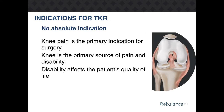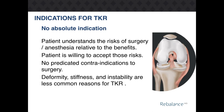While there is no absolute indication on whether surgical treatment is required, knee pain is the primary indicator. Another strong indicator is whether knee disability affects the patient's quality of life. In order to be indicated for knee replacement surgery, the patient must understand the risks of surgery and anesthesia relative to their benefits, be willing to accept those risks, and not have any predicated contraindications to surgery. Other less common reasons include deformity, stiffness, and instability.